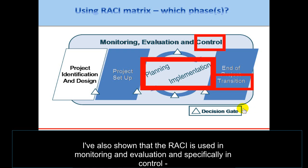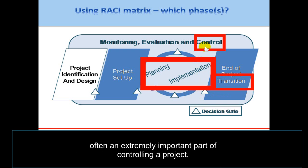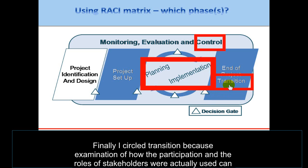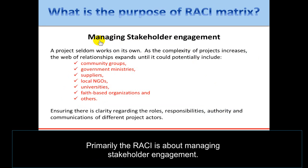The RACI Matrix is also used in monitoring and evaluation, specifically in control, because the management of stakeholders and communication to stakeholders is often an extremely important part of controlling a project. Transition is also relevant because examining how the participation and roles of stakeholders were actually used can be part of the reflection process to improve future development interventions. Primarily, the RACI is about managing stakeholder engagement.